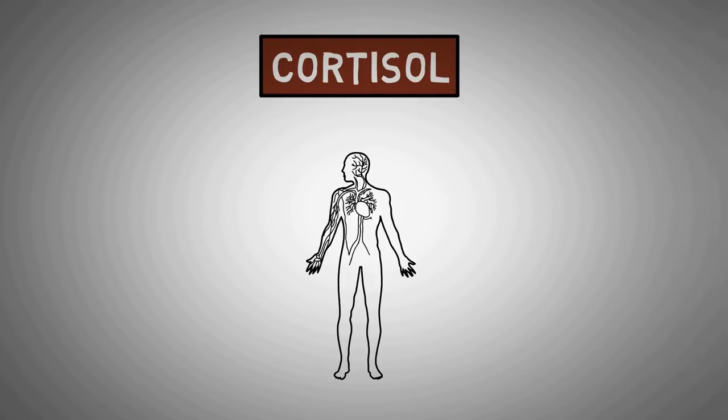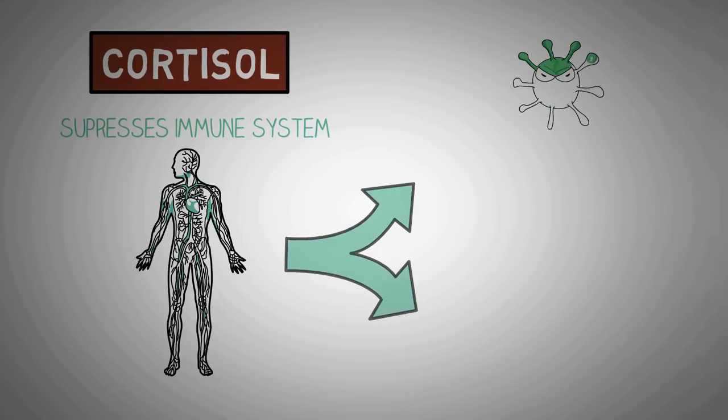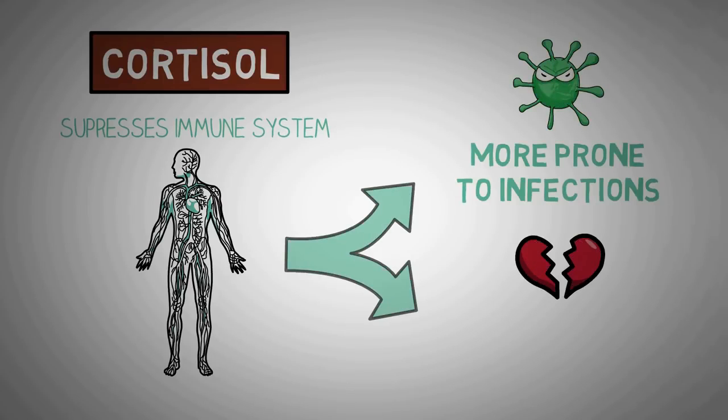Cortisol is also known to suppress the immune system and make you more prone to infections and other health problems. Elevated cortisol is also linked to health issues related to the heart, blood sugar, and high cholesterol.